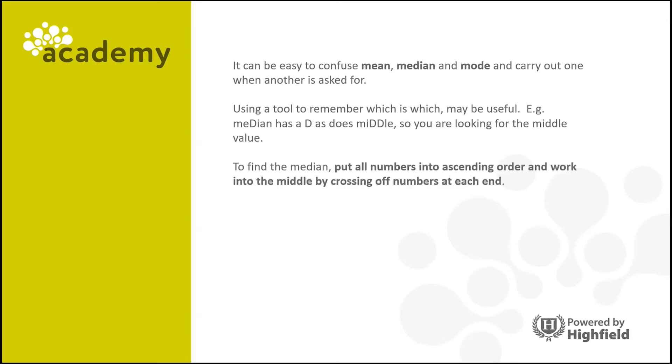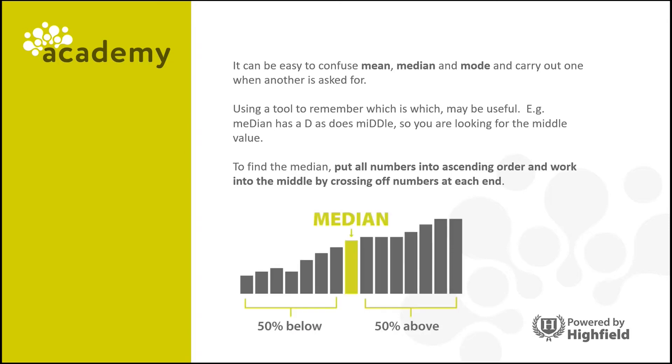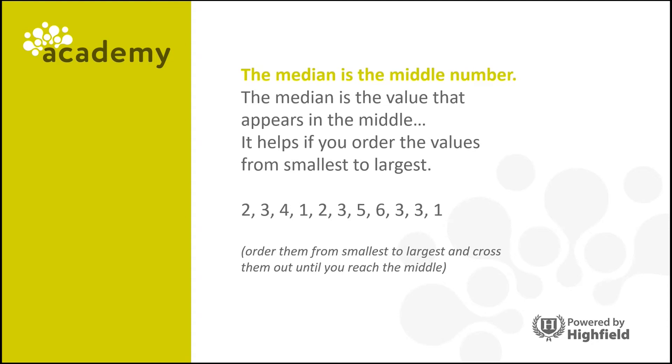So to find the median, all you need to do is put the numbers in order from lowest to highest, work into the middle by crossing off numbers on each end. Now the median is the value that appears in the middle.